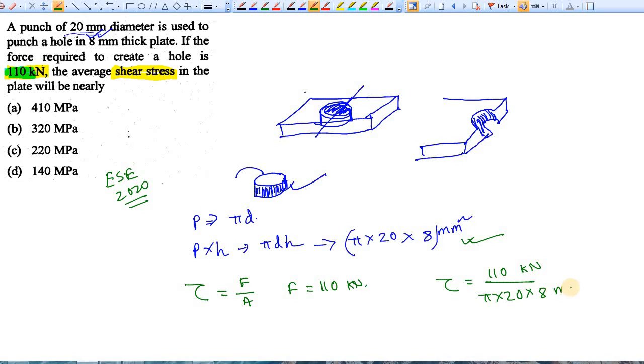You have to give the answer in MPa. MPa means Newton per mm². Simply multiply this with thousand and remove the kilo prefix. Now this is in Newton per mm².